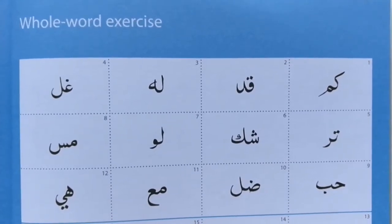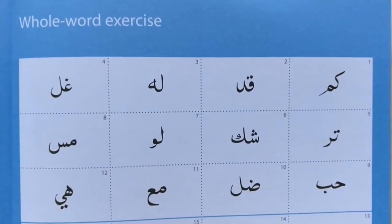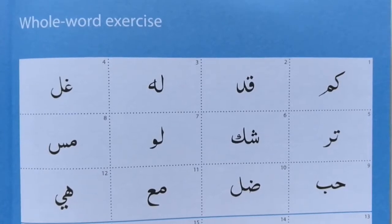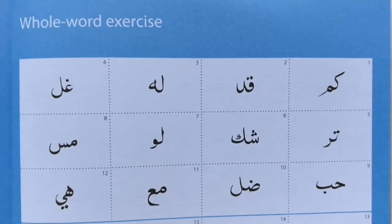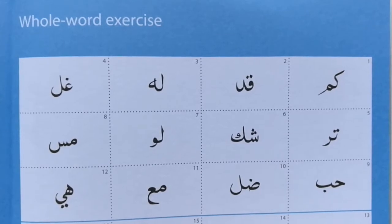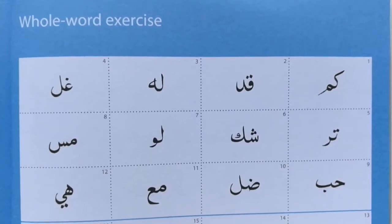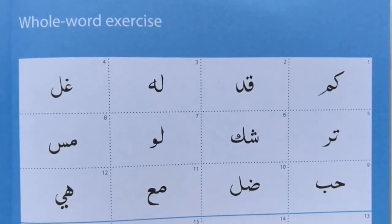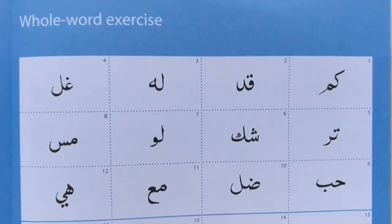Assalamu alaikum warahmatullahi wabarakatuh, welcome back. Today we're looking at letters joined together. In this first section we've got two letters joined together. These in the Quran will be joined by either sukoon or the law of harakaat — fatha, dhamma, kasra — but here we're just concentrating on recognizing what letters are actually there.